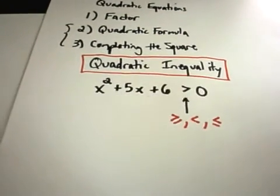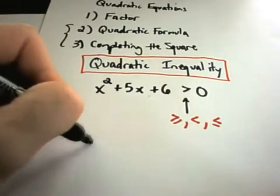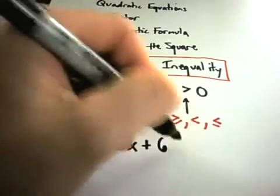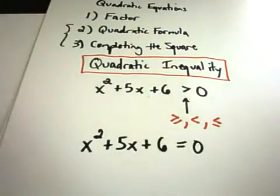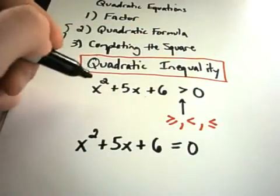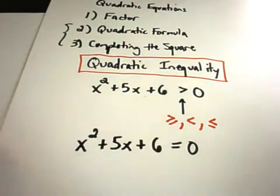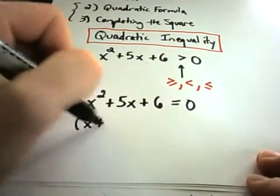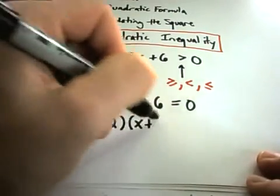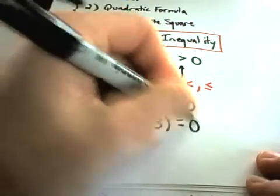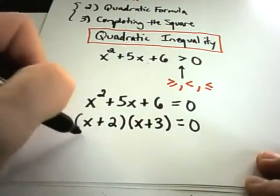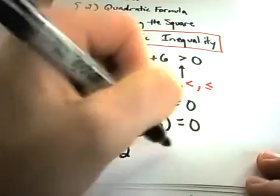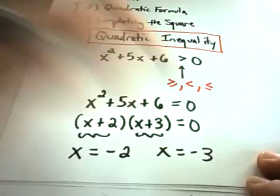The first thing you do when solving quadratic inequalities is solve the corresponding quadratic equation. The best way to solve this one is to factor it. I can factor x squared plus 5x plus 6 as x plus 2 times x plus 3 equals 0. Solving each factor gives x equals negative 2 and x equals negative 3.